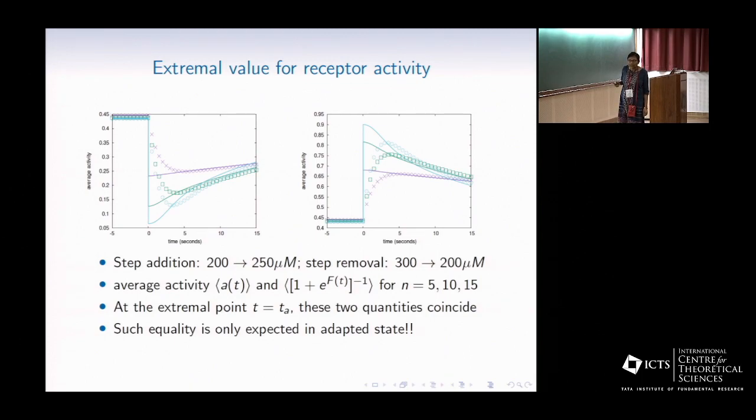But you see, at the tip of these curves, they are equal again. Which means, at the extremal point, t equals t*, when the activity is farthest away from any adapted state, we satisfy the equality which is expected only in adapted state.